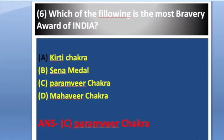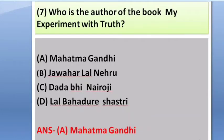Question number 7: Who is the author of the book 'My Experiments with Truth'? Options: A — Mahatma Gandhi, B — Jawaharlal Nehru, C — Dadabhai Naoroji, D — Lal Bahadur Shastri.